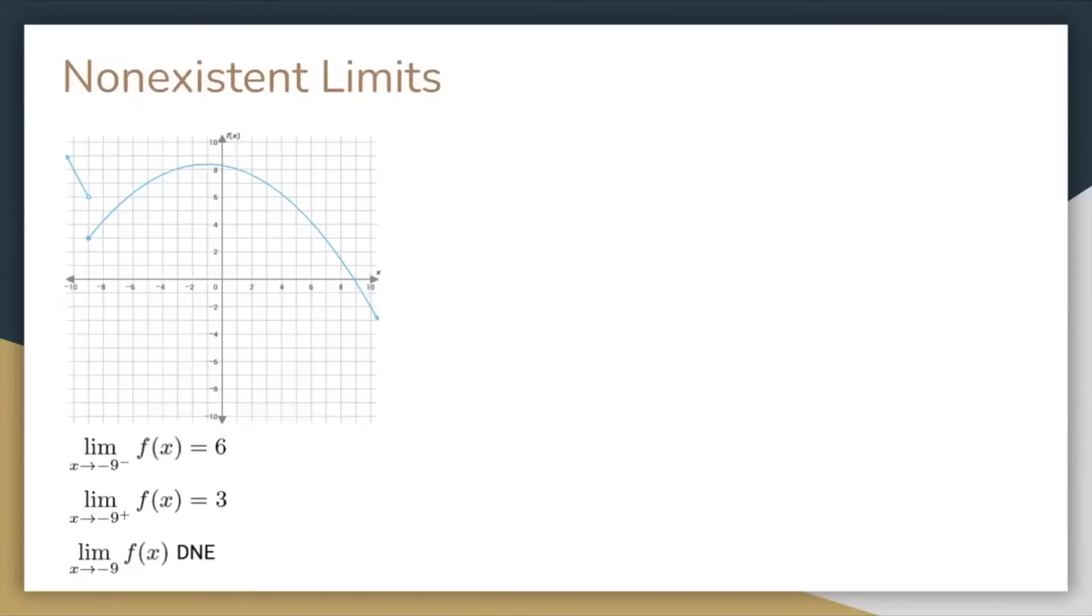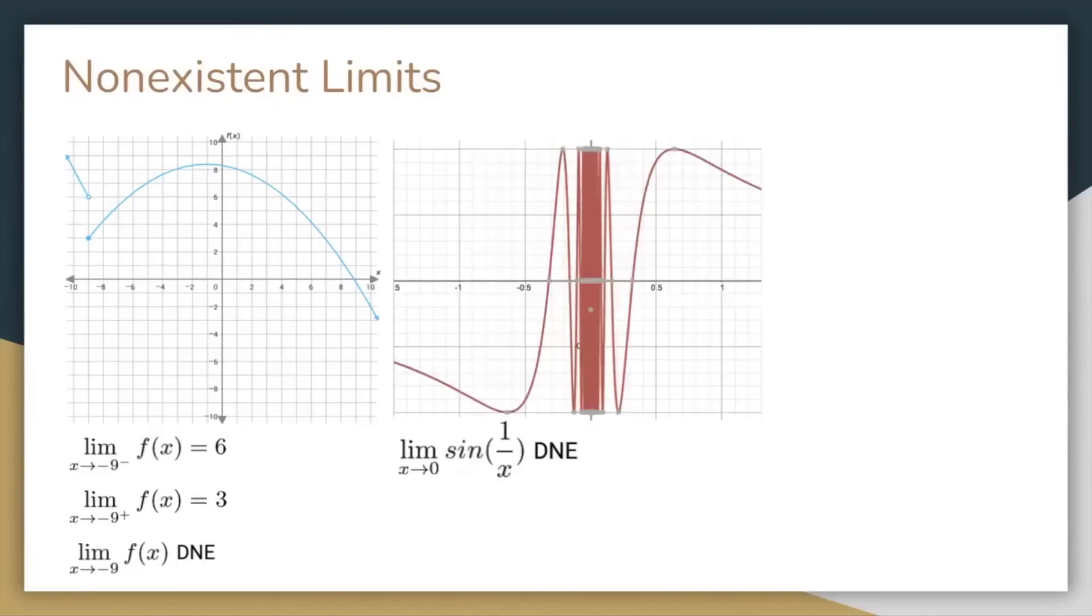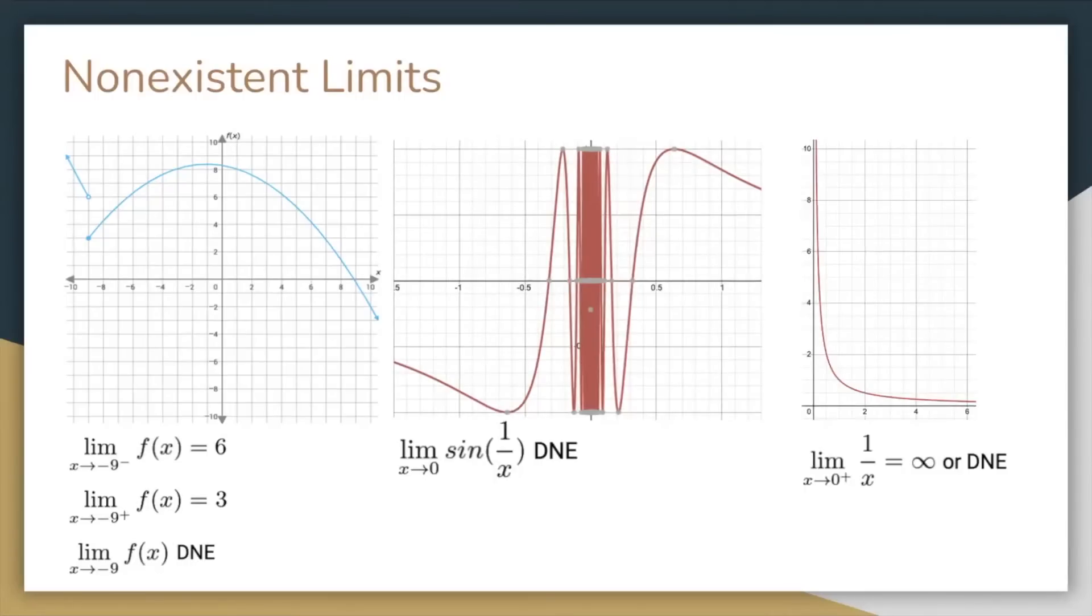There are some reasons why limits may not exist. The first is if you get a different result depending on which direction you approach the specified value from. In this piecewise function, for example, the limit as x approaches negative 9 doesn't exist. Another reason is if the graph oscillates infinitely. For sine of 1 over x, as x approaches 0, f of x continuously swings back and forth between negative 1 and 1 increasingly quickly, so the limit doesn't exist. Another reason is if the limit is unbounded. Infinity and negative infinity aren't considered numbers, so the limit is considered non-existent.